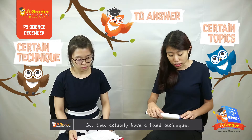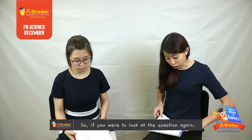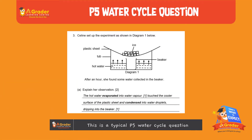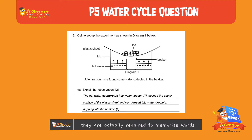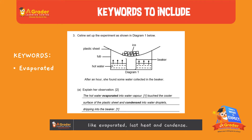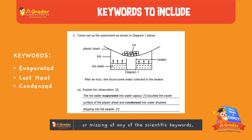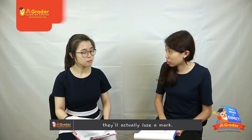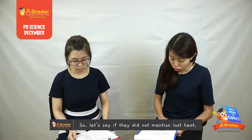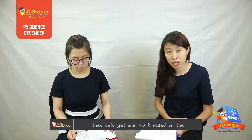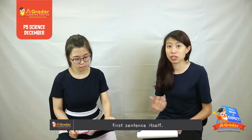They actually have a fixed technique. If you look at this question, this is a typical P5 water cycle question that will come up. What happens is they are actually required to memorize words like 'evaporated', 'lost heat', and 'condensed'. If they did not include any of these, or are missing any of the scientific keywords, they will actually lose a mark. So if they did not mention 'lost heat', they only get one mark based on the first sentence itself.